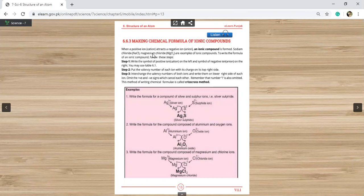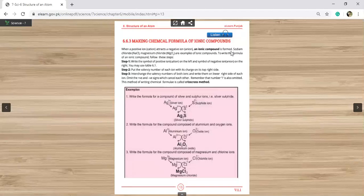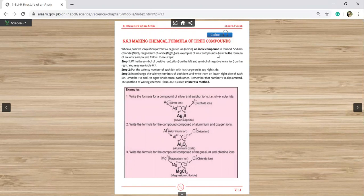When a positive ion attracts a negative ion anion, an ionic compound is formed. When any positive ion which is called cation and negative ion which is called anion get together, it is called an ionic compound.